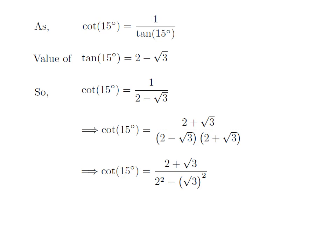So we get cotangent of 15 degrees is equal to 2 plus square root of 3 upon the square of 2 minus the square of square root of 3. As the square of 2 is equal to 4 and the square of square root of 3 is equal to 3.